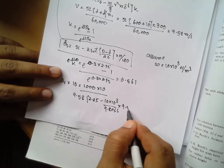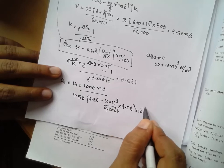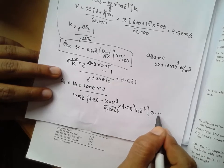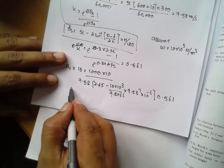9.58 whole square into 10 raised to minus 6 into 0.561. If you calculate, the value will be a is equal to 86.28.